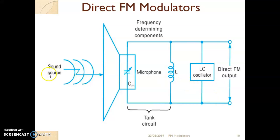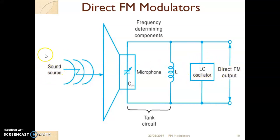When the modulating signal amplitude or intensity is changing, the frequency of the tank circuit will change. This tank circuit is connected with the LC oscillator, and because of that, the frequency of the LC oscillator will also change, producing the direct FM output. We have to look at how the frequency of the LC oscillator changes — it changes because of the magnitude or amplitude of the sound source, which we call the instantaneous frequency deviation. So the output frequency is directly proportional to the amplitude of the modulating signal.